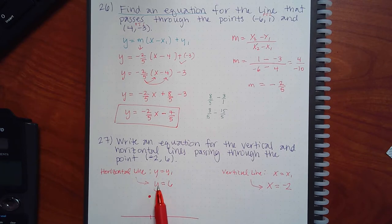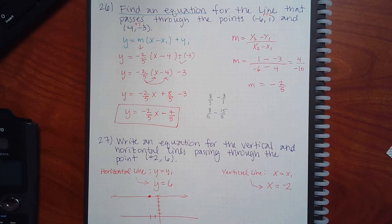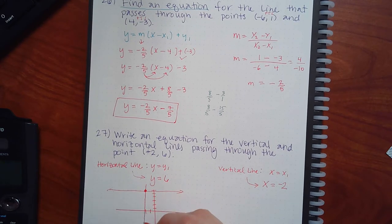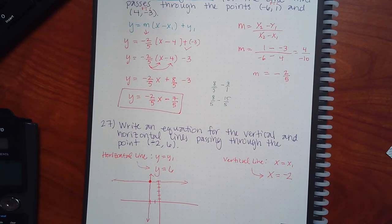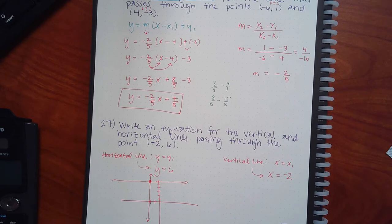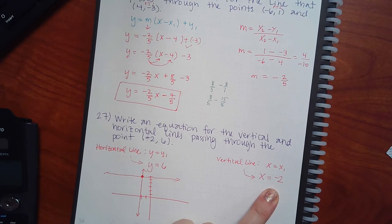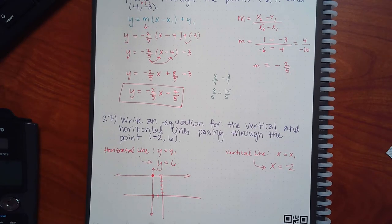If I draw the line y = 6, that's a straight horizontal line. If I draw a vertical line through the dot, that's x = negative 2. For the horizontal line, you don't need two points because the y is always going to be six — no matter what. The x value could be anything. For a vertical line, the x is always going to be negative two.